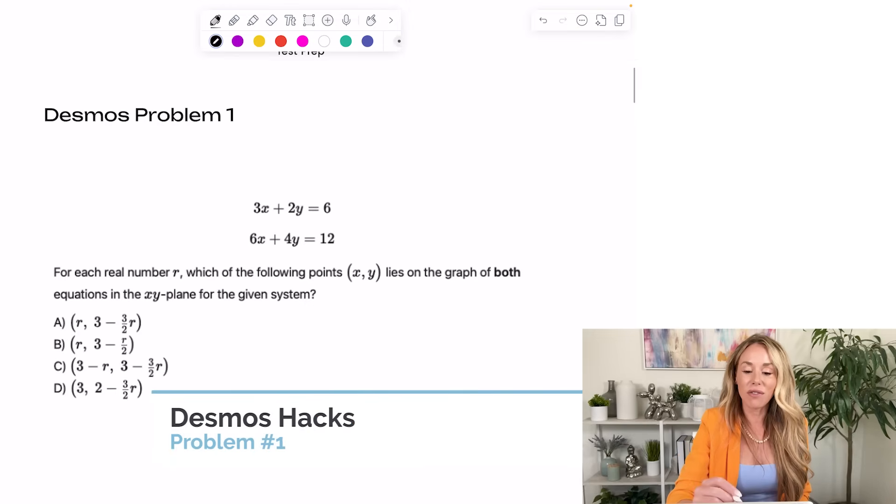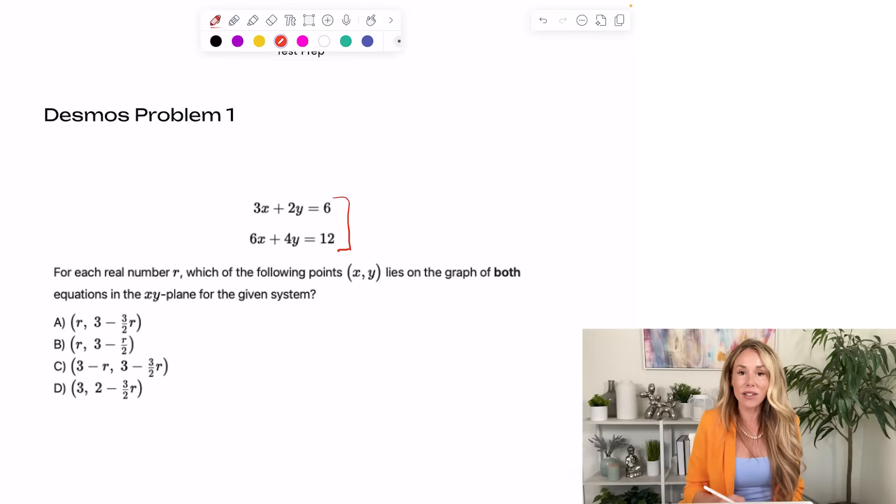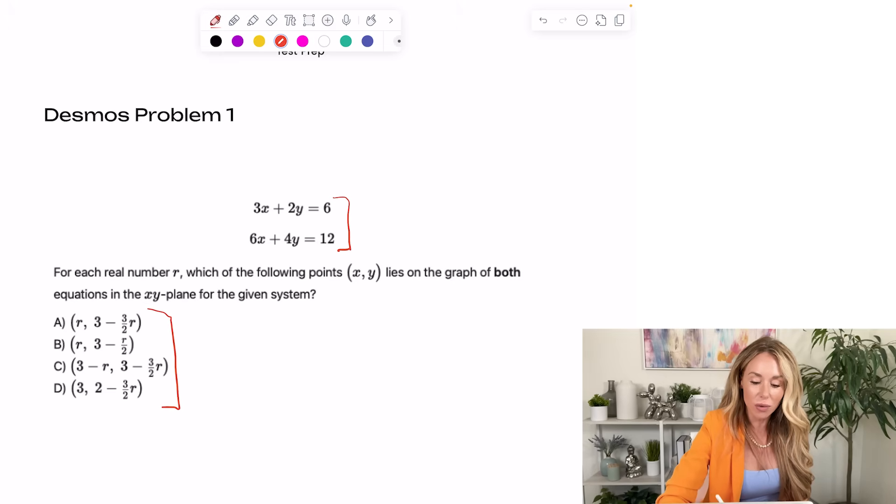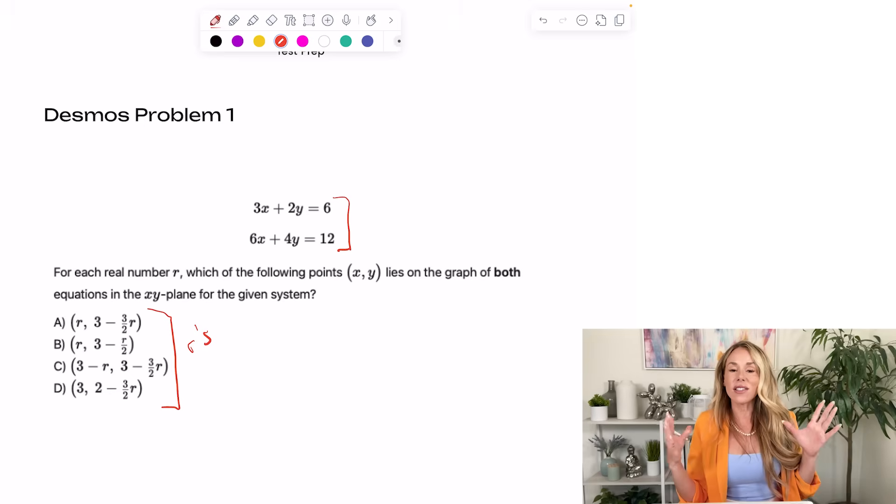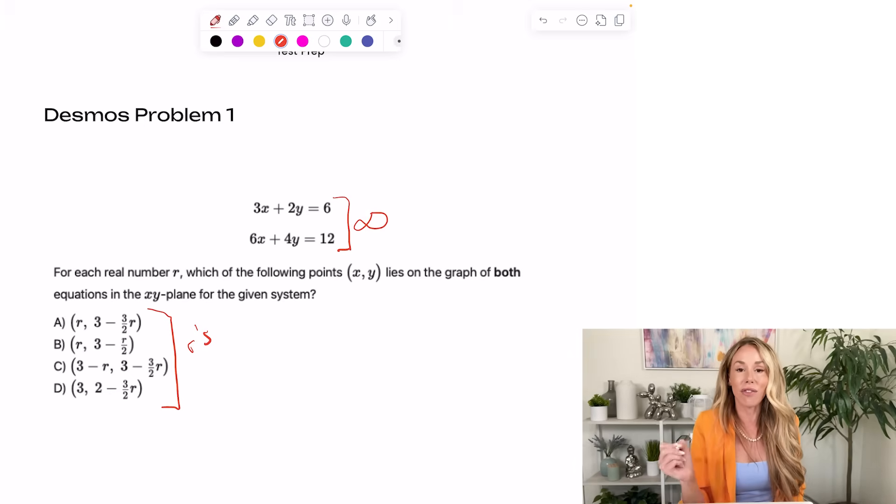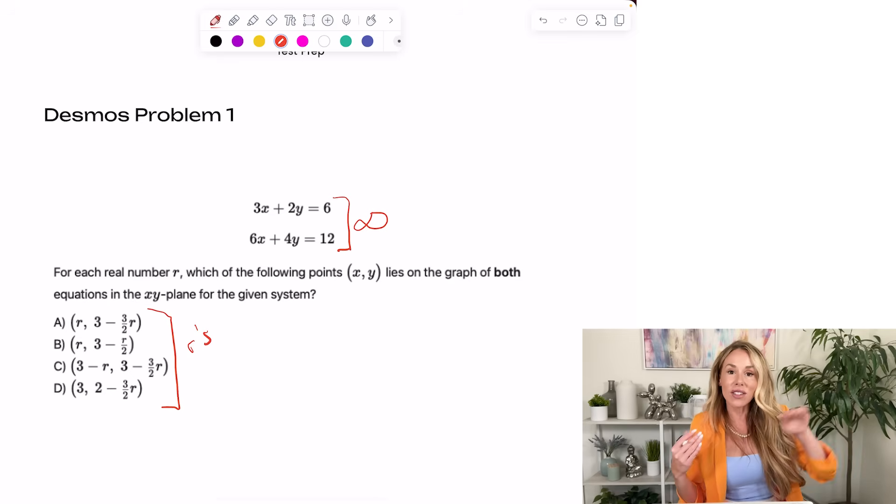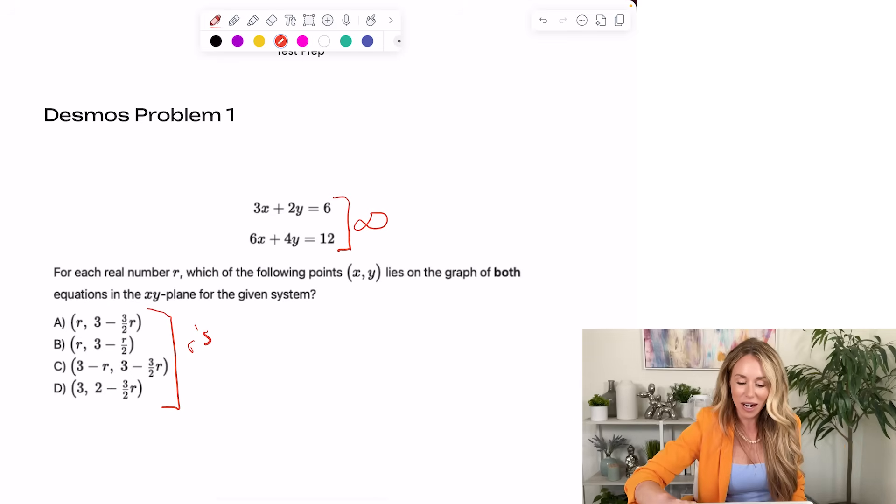Alright guys, this whole problem set is actually in the description below so that you can follow along with me, you can print it out, you can take notes on it. So that's definitely there for you if you want to do these problems with me. Let's talk about problem one, because if you see a problem that's a system of equations, and then you see answer choices with R's in them. Basically, this is a case where the system is probably infinite, meaning they're the same line when you graph both of them.